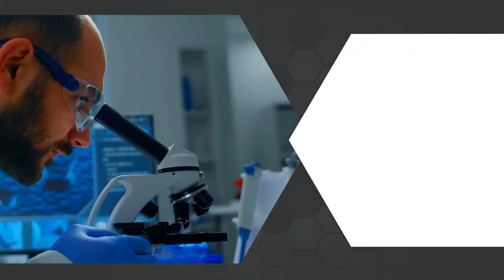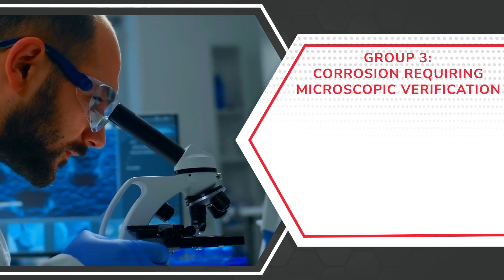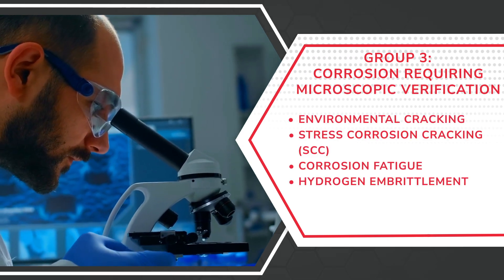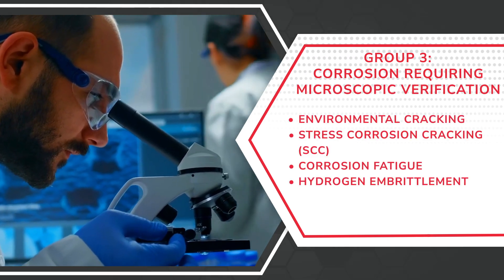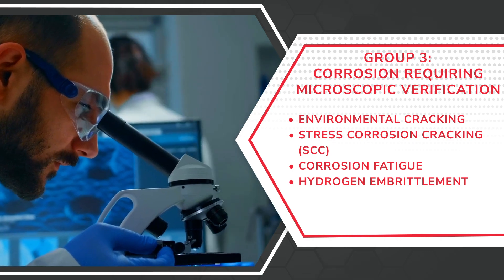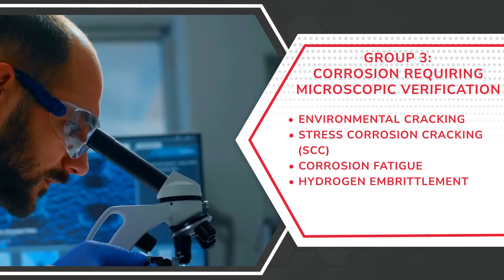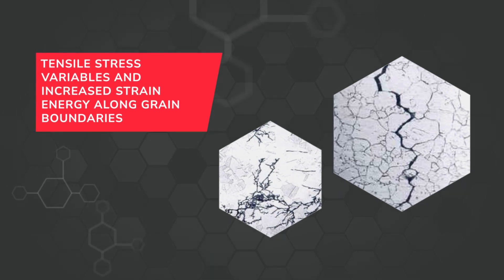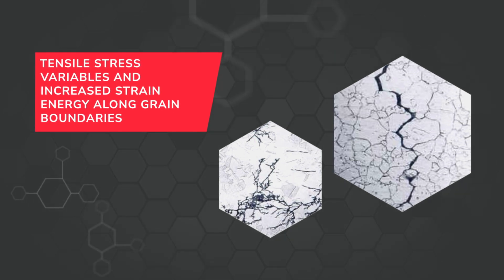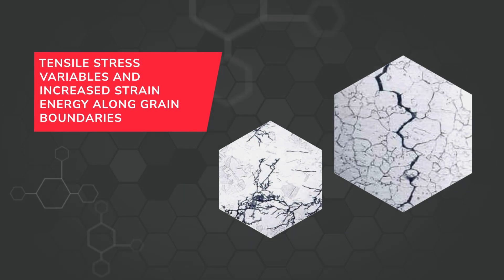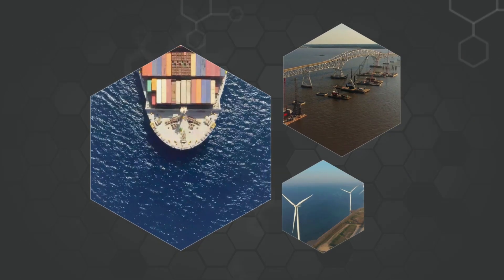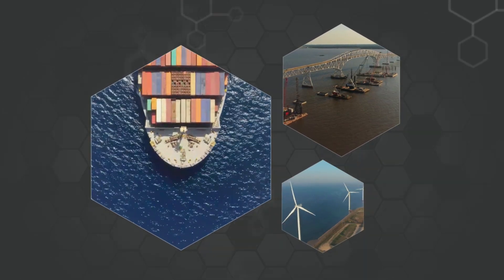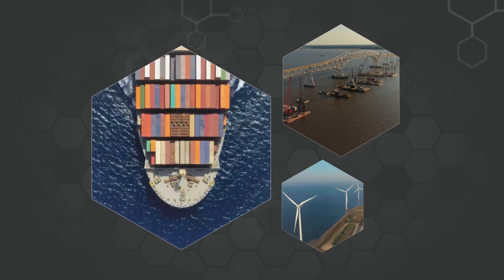Finally, there are forms of corrosion that require microscopic verification. These are the most serious types of corrosion because they cause cracks to form and can lead to structural failure from overload. Tensile stress variables and increased strain energy along grain boundaries are likely to cause this type of corrosion. High localized stress and metal that is subjected to cold work are likely to corrode in this manner and crack more quickly.